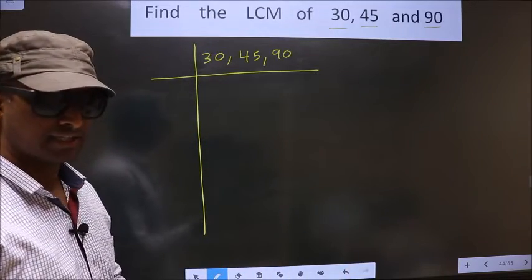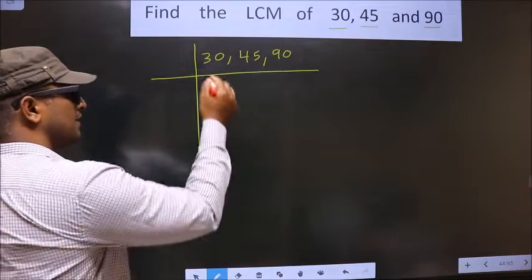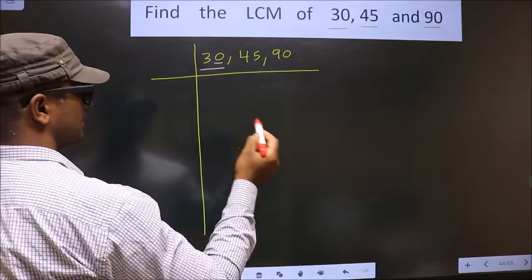Okay, next. Now we should focus on the first number, that is 30 here. Now for this number, last digit is 0.